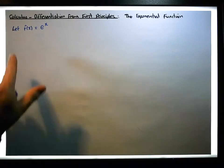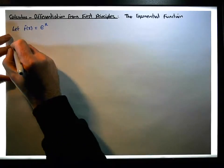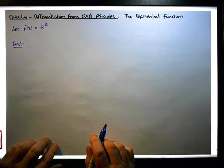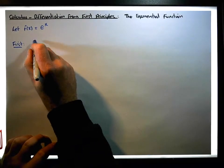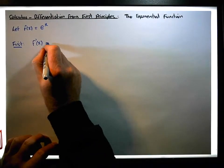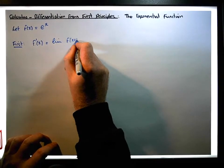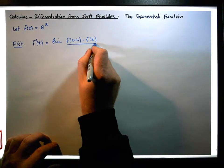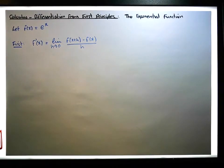For this particular derivation, we're going to require two facts. The first is the concept of a derivative, which states that the derivative of a function f — f prime of x — is equal to the limit of f of x plus h minus f of x, all over h, as h tends to zero. That's our definition of a derivative.